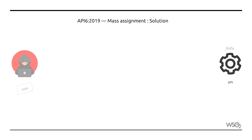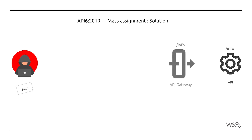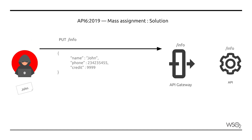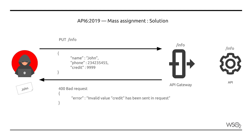An API gateway is used to expose the personal information API and validate the schema of the request being sent. This will ensure that any request that contains fields other than the specified ones will be denied, thereby preventing the exposure of the API that is vulnerable to mass assignment.